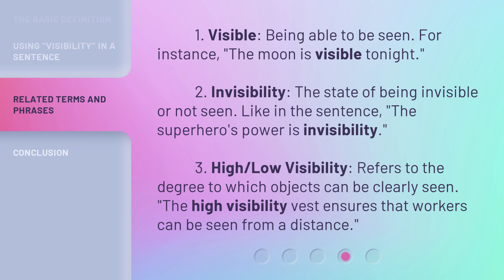3. High/low visibility — refers to the degree to which objects can be clearly seen. The high visibility vest ensures that workers can be seen from a distance.